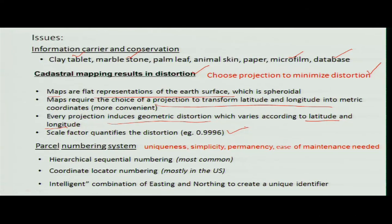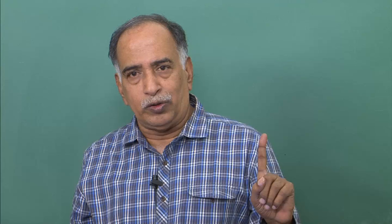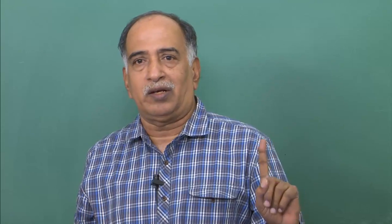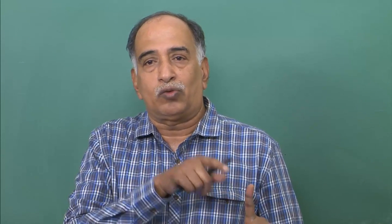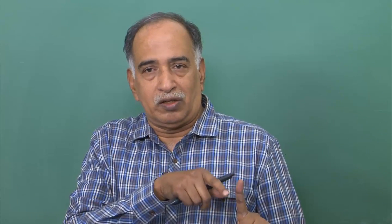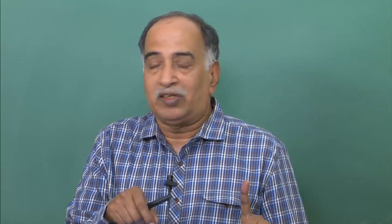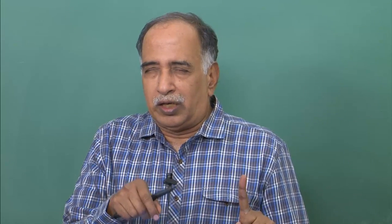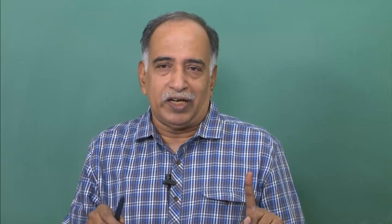The parcel number system is hierarchical. If you have a larger area, you denote it as 1 — like a taluk — and under that taluk you have different villages numbered as 1-0-0, where the first digit represents the taluk and the second digit represents the village number which has been identified.